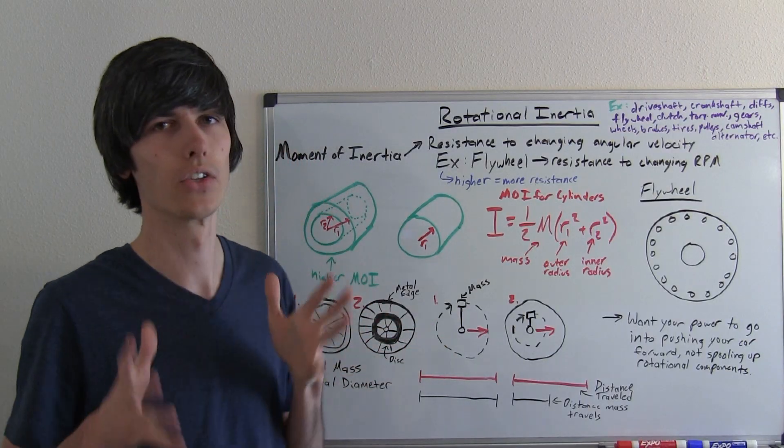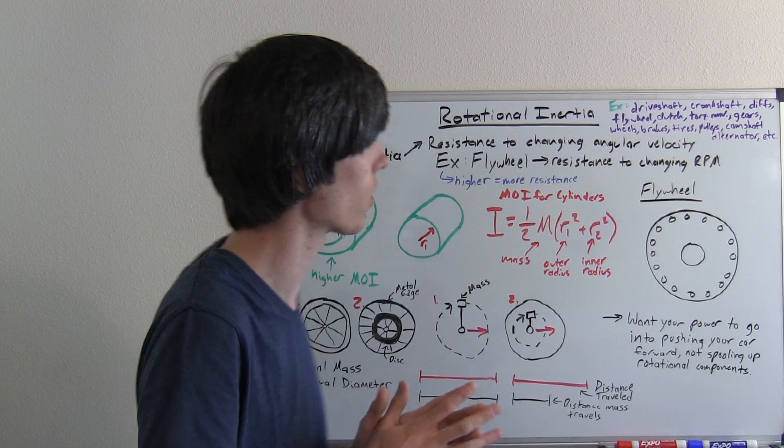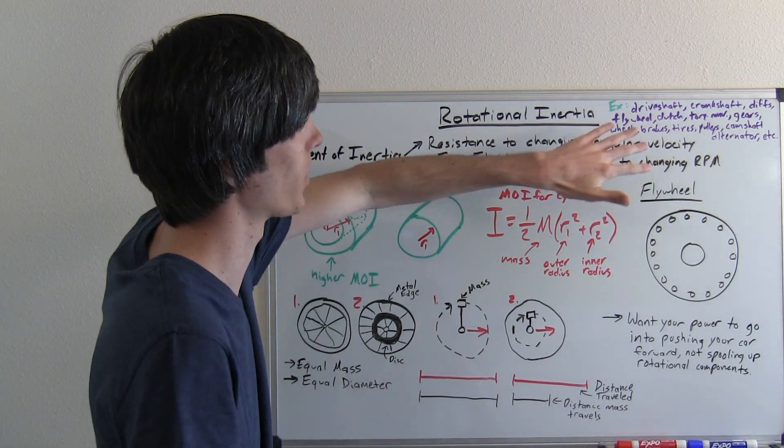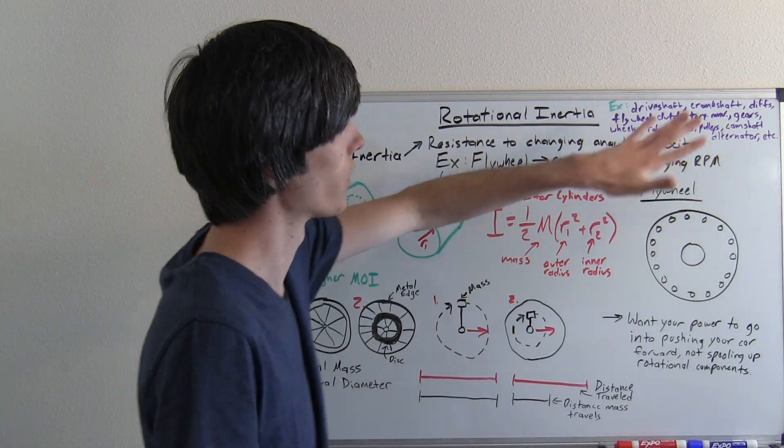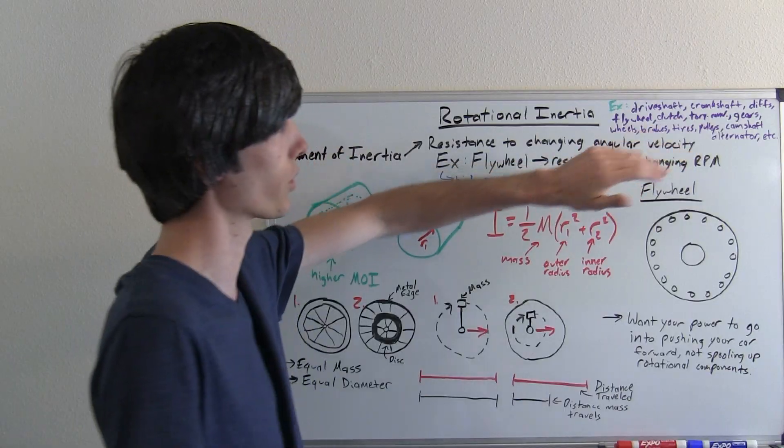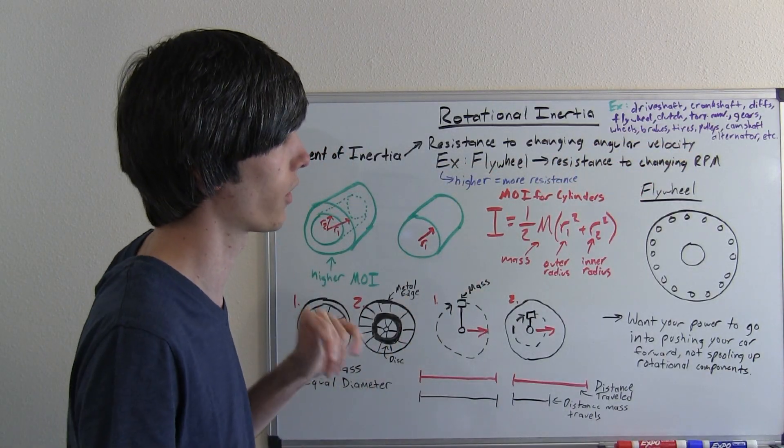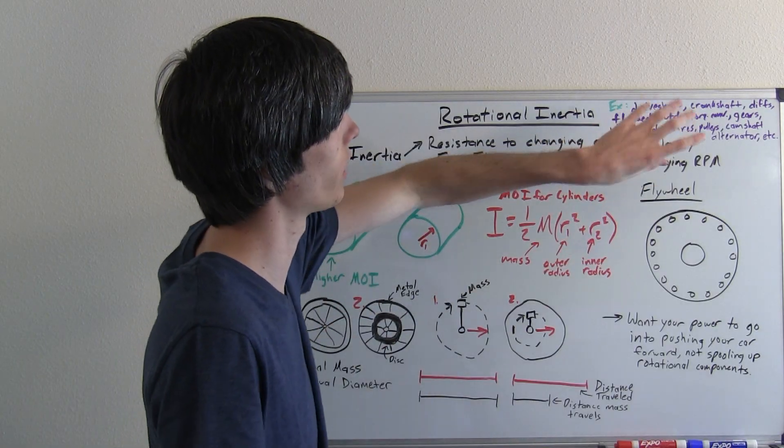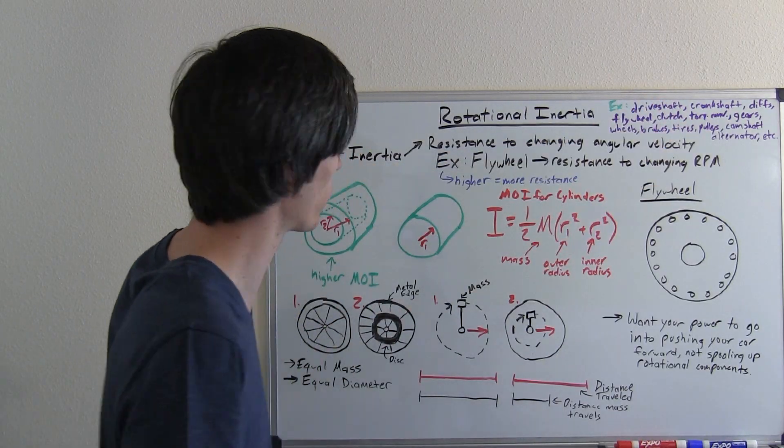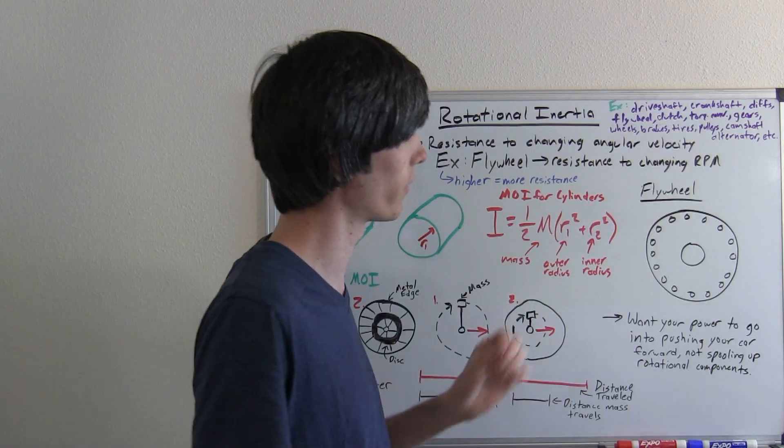This applies to everything that rotates in a car. I've written down some examples and there's probably plenty more: driveshafts, crankshafts, differentials, flywheel, clutch, torque converter, gears, wheels, brakes, tires, pulleys, camshafts, alternators. Most of these can be represented simply with a cylinder in some form or another.